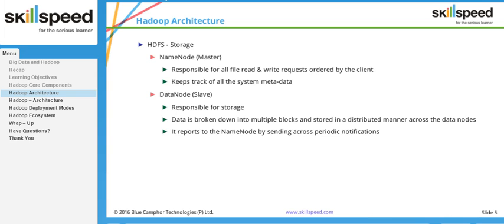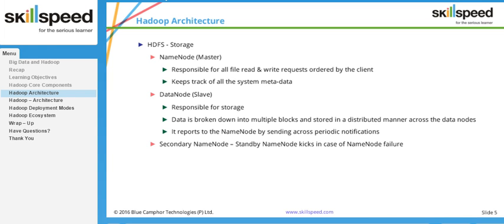There is also a daemon called the Secondary NameNode. It is a standby machine, but not a hot standby — if the primary NameNode goes down, the Secondary NameNode can take its place, but manual intervention and configuration are required. The Secondary NameNode is also used for checkpointing, where you periodically take a backup of the entire metadata.